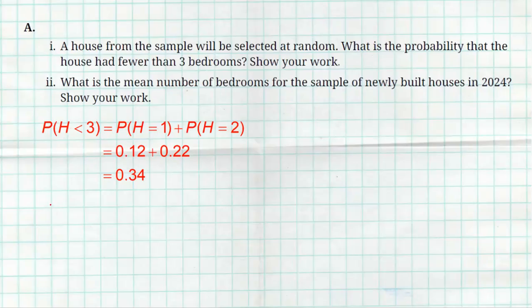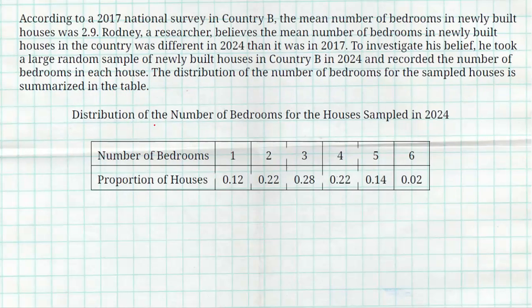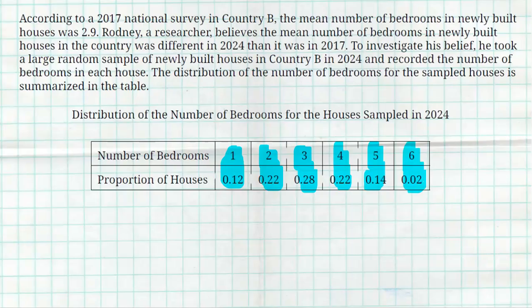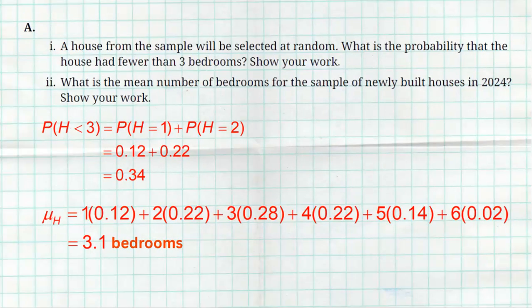The next question asks for the mean number of bedrooms for the sample. To find the mean, take each outcome multiplied by its probability — one times 12%, two times 22%, and so on all the way to six times 0.02. Add all of those values together. I used my calculator to do that work, but make sure you have it shown, since the problem says to show your work. The total comes to 3.1 bedrooms.